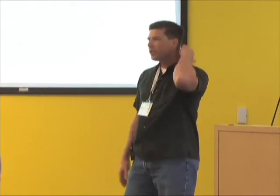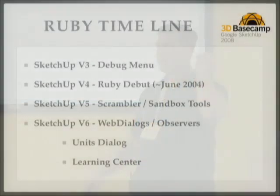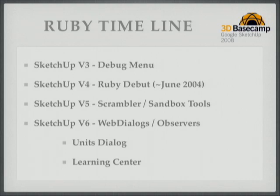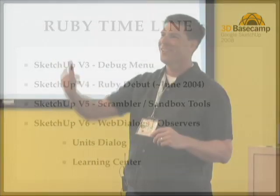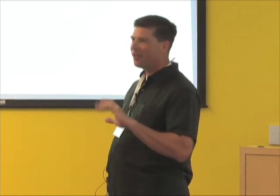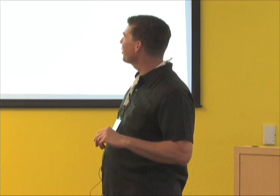A little history: in SketchUp version 3, there wasn't a Ruby API. Version 3 had a debug menu with a macros section — it was even set up for Visual Basic. So whoever the genius was that picked Ruby as the language — was it Tyler? Joe? — thank you, it's a great language. I didn't know a thing about it in 2004 but I learned quickly. Ruby came out in June of 2004.